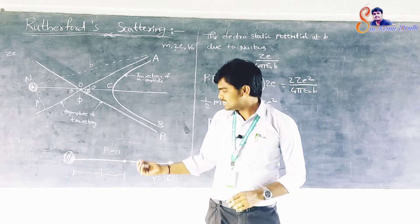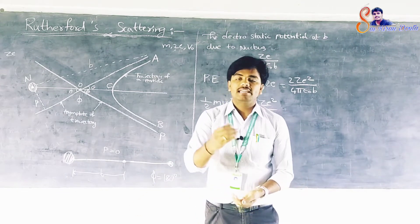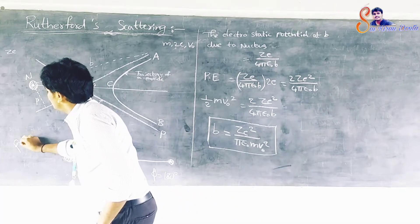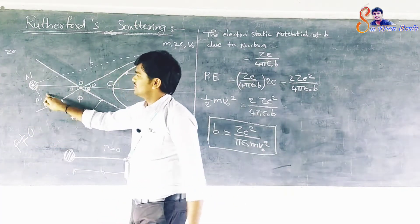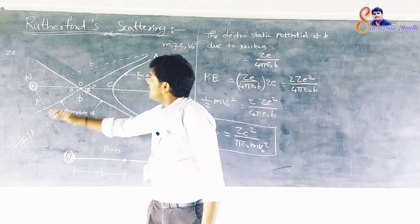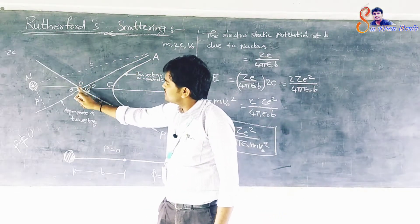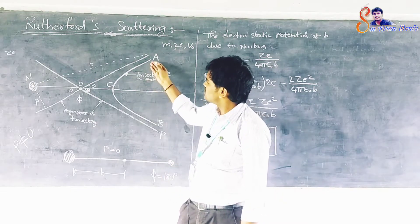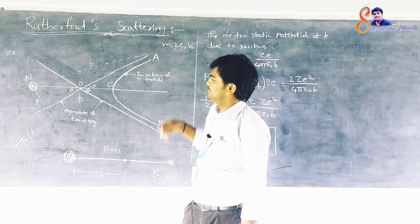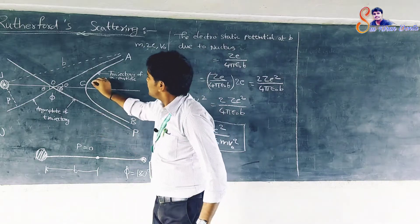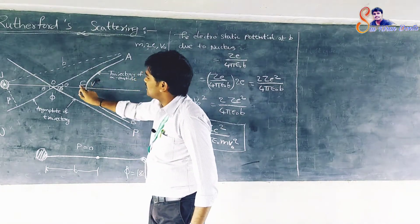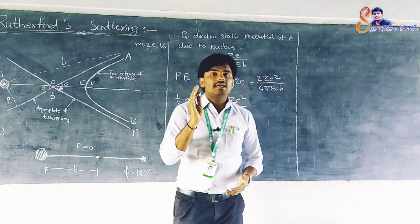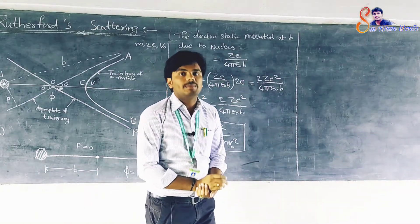But this case is not possible in actual practice. Hence we consider the case where P is not equal to 0. In this case, the alpha particle is deflected through an angle less than 180 degrees and follows the hyperbolic path ACB. Let V be the velocity of the alpha particle at the vertex C.